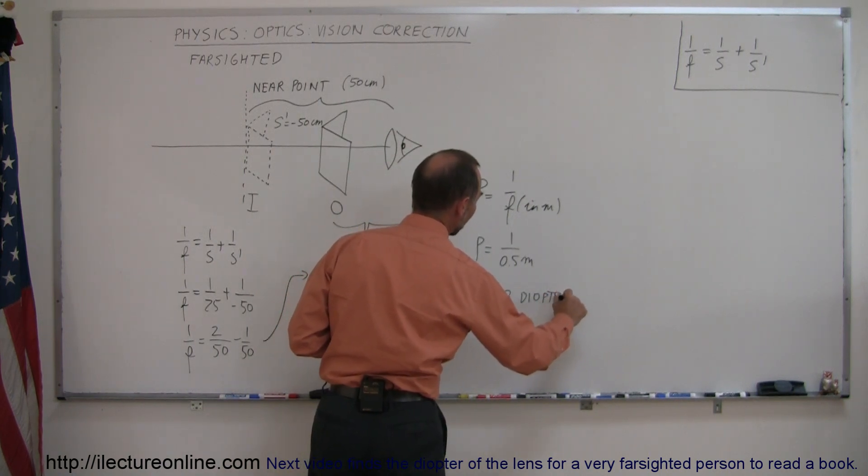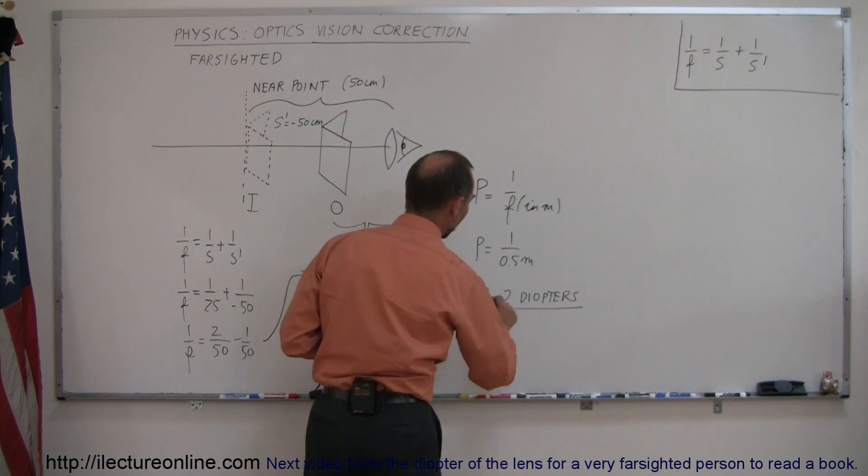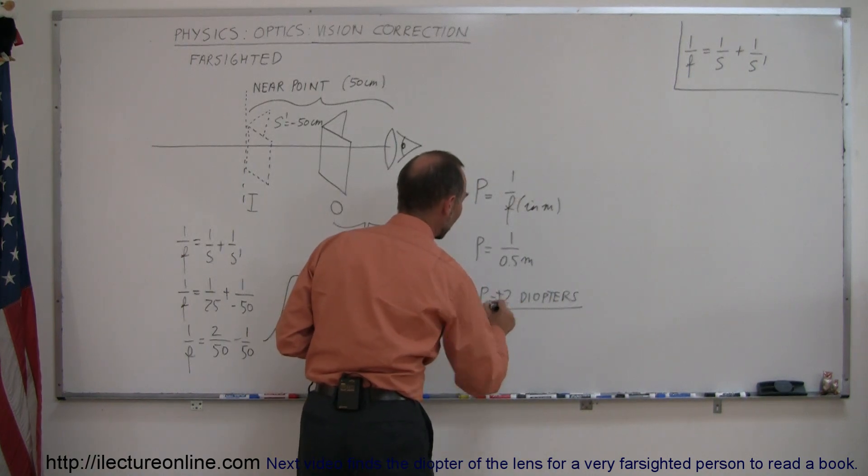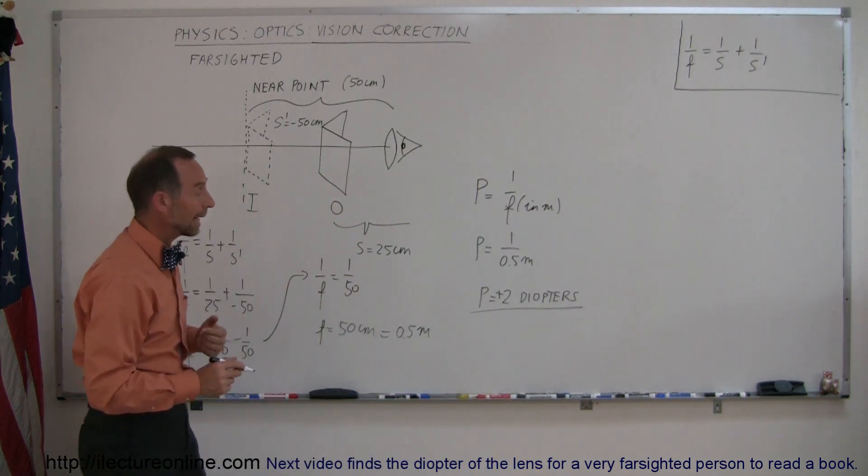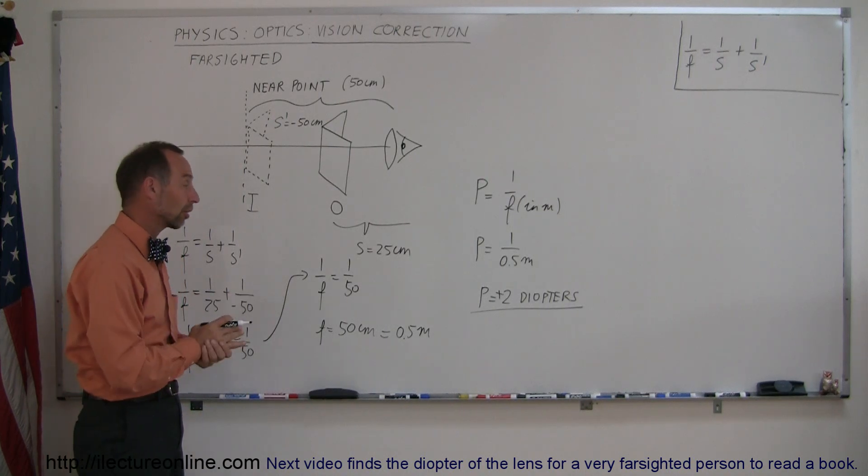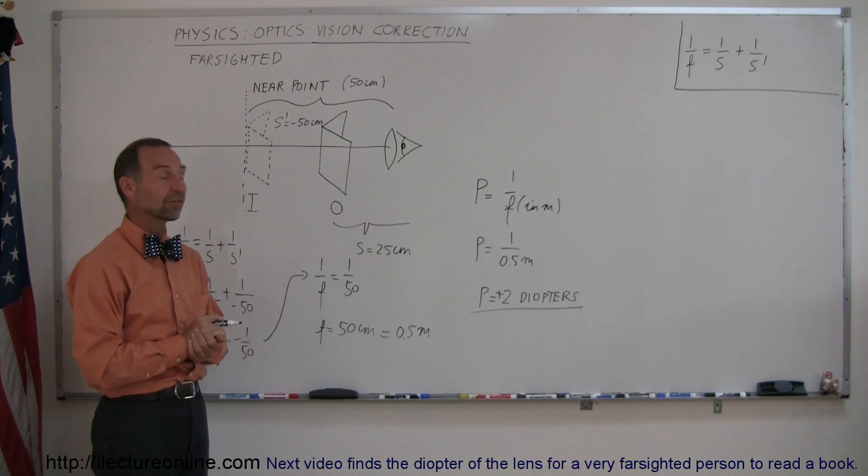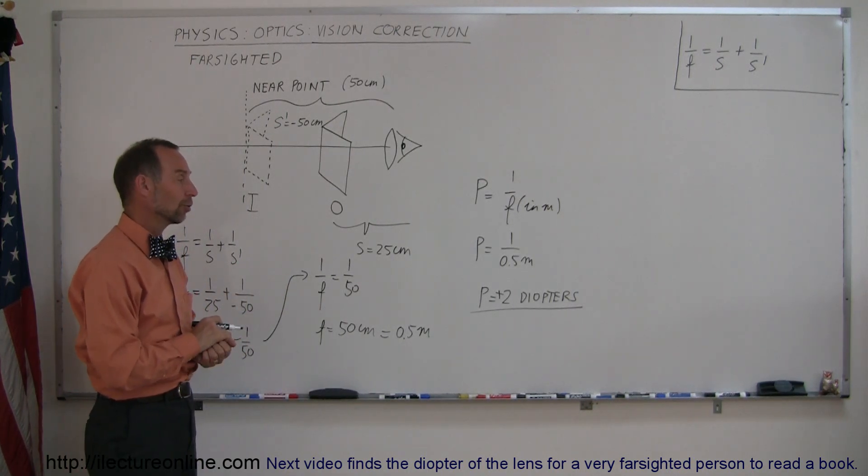Diopters is the units used for the power of the lens. And plus 2 means that it's a positive lens or a converging lens. So you need to go down to your drugstore and find some reading glasses that says that the power is 2 diopters.